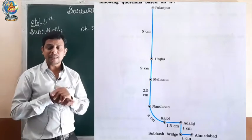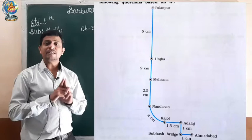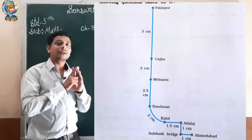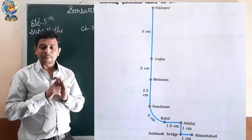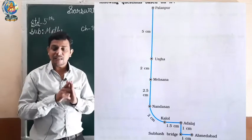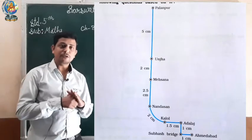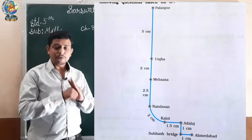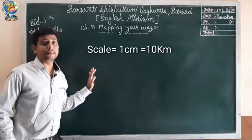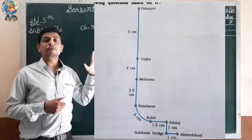The distances between places are also given on the map. From Ahmedabad to Subhas Bridge the distance is 1 centimeter. From Subhas Bridge to Adalaj is also 1 centimeter. From Adalaj to Kalol is 1.5 centimeter. From Kalol to Nandasar is 2 centimeter. From Nandasar to Mahsana is 2.5 centimeter. From Mahsana to Unja is 2 centimeter. And from Unja to Palanpur is 5 centimeter. The scale of the map is 1 centimeter equals 10 kilometers. We have discussed this map and now we will solve the question answers.